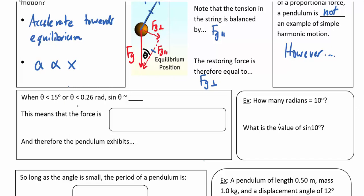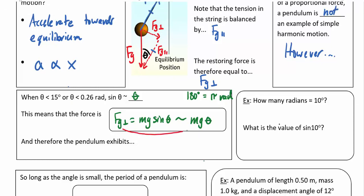For small angles less than 0.26 radians, the sine of theta is approximately equal to theta. So the restoring force FG perpendicular, which equals mg times sine of theta, is approximately equal to mg theta. For small angles the force is directly proportional to the angle from equilibrium, and therefore the pendulum exhibits simple harmonic motion for small angles only.